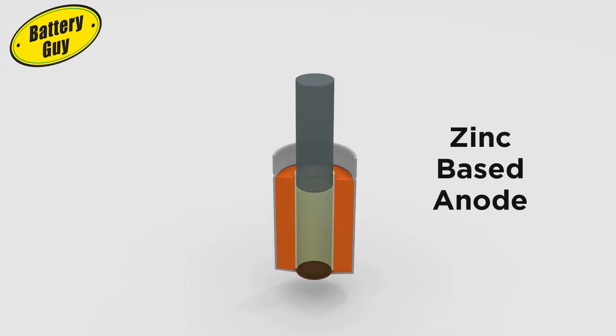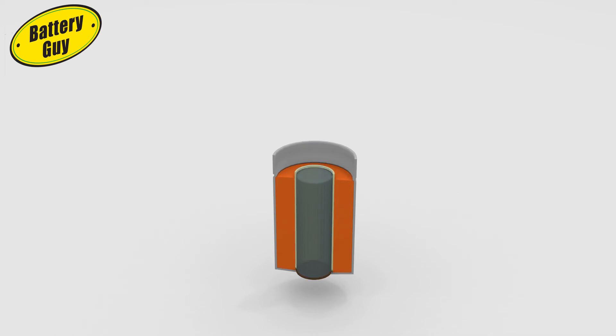A zinc-based paste or gel anode is then inserted into the remaining space, and a collecting pin is inserted into the center of the anode. This will connect the anode to the negative terminal.